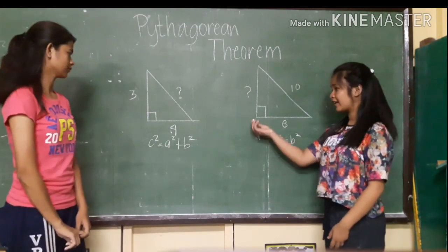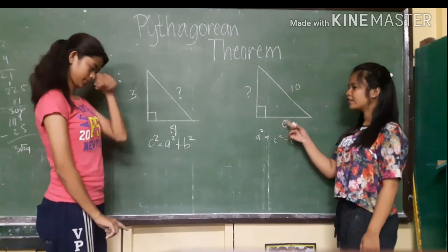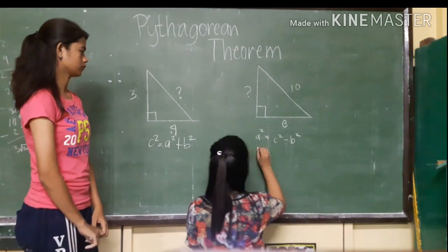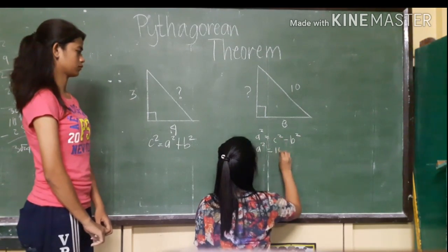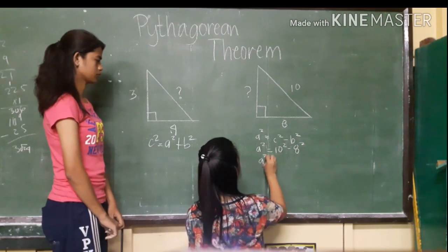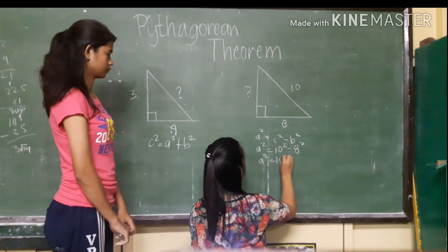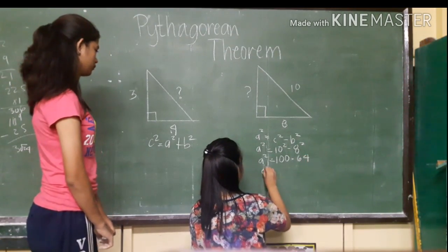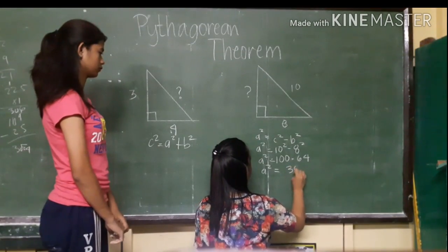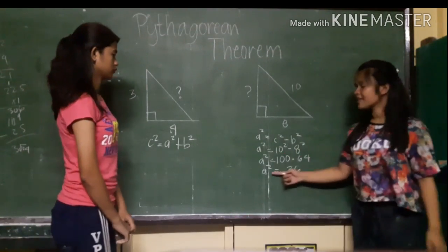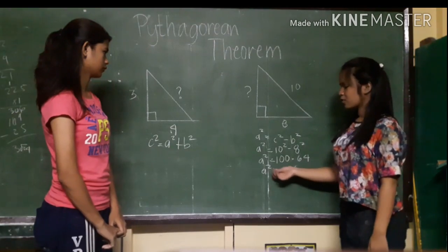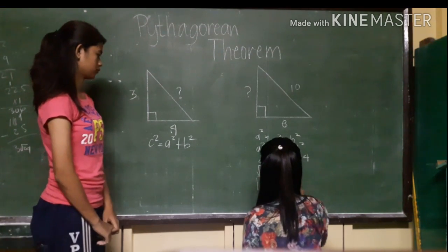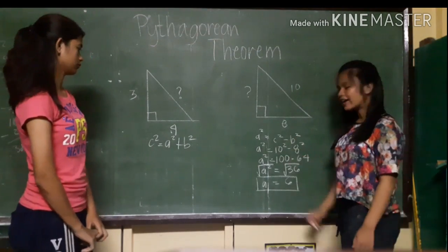In this example, let's try to find the length of this right triangle. We can use the formula a squared equals c squared minus b squared. 10 squared is equal to 100, minus 8 squared is equal to 64. Subtracting gives 36. To find a by itself, we take the square root of both sides. So the value of the length in this triangle is 6.